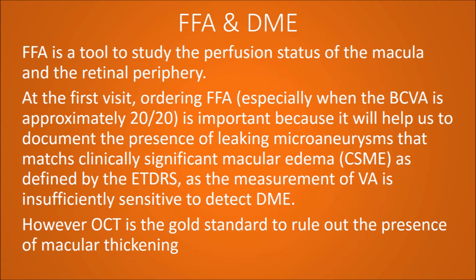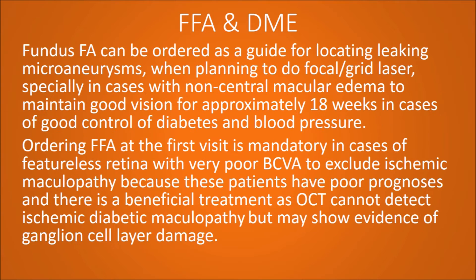As we discussed in the previous presentation, OCT is a tool to evaluate the structural changes of the macular tissue induced by metabolic changes because of diabetes. Fluorescein angiography is a tool to study perfusion status of the macula and retinal periphery. At the first visit, ordering fluorescein angiography, especially when best corrected visual acuity is approximately 20/20, is important because it helps document the presence of leaking microaneurysms. OCT is the gold standard to rule out the presence of macular thickening.